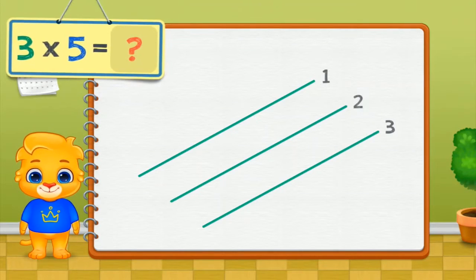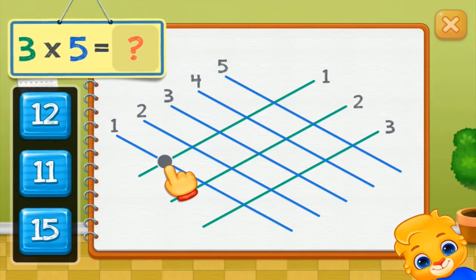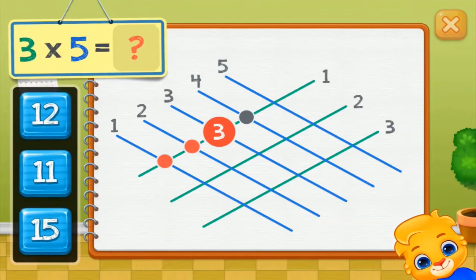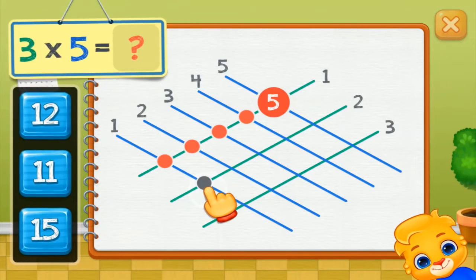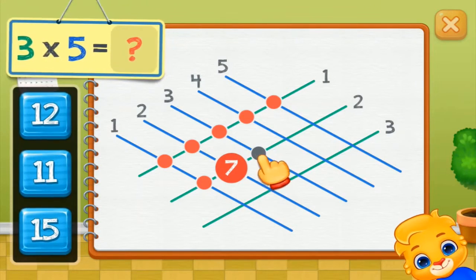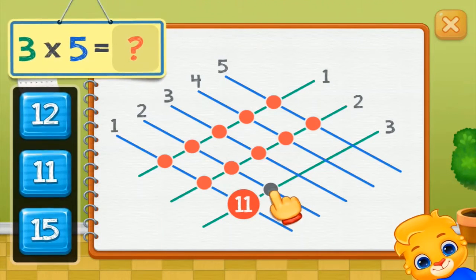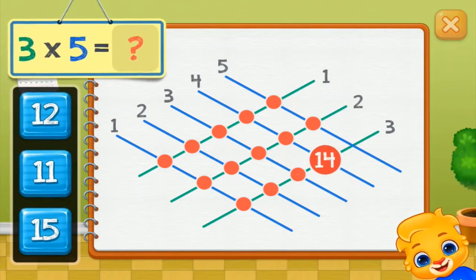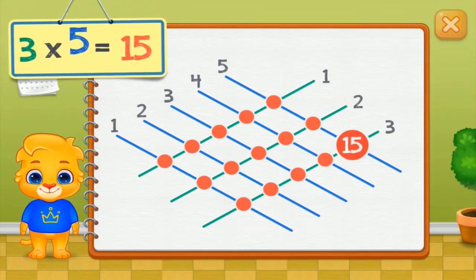3 times 5 equals — touch intersection points. 1, 2, 3, 4, 5, 6, 7, 8, 9, 10, 11, 12, 13, 14, 15. 3 times 5 equals 15.